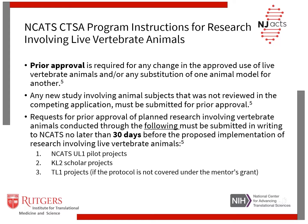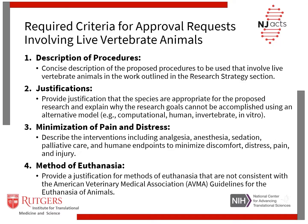NJACTS researchers require prior approval for research involving live vertebrate animals as defined by the NCATS CTSA program. A link to the worksheet with the criteria required will also be provided with this slide deck. In order to obtain approval, the following four criteria must be met and defined: first, the description of procedures; the justifications for the animal research; the interventions used to minimize pain and distress in the animals; as well as the method of euthanasia used.